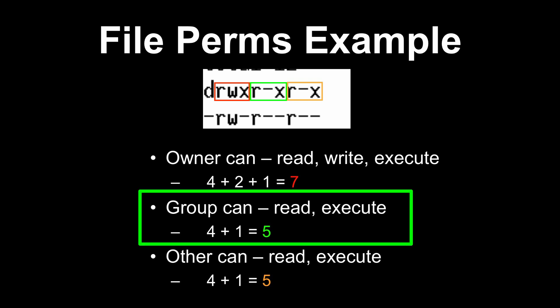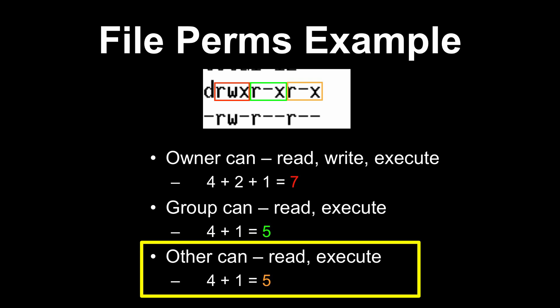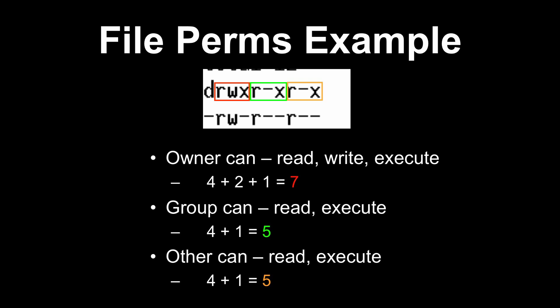What can the group do to this file? It can read and execute it — in this case it's a directory. So you take 4 for read and 1 for execute and get 5. What can everybody else in the system do? They can read and execute as well, so that permission is also 5. So a permission of 755 is a way of quickly saying the owner can read, write, and execute; a group can read and execute; and all other users in the system can read and execute — in this case, a directory.